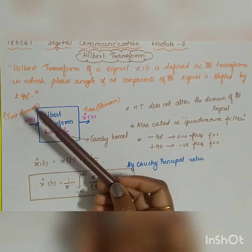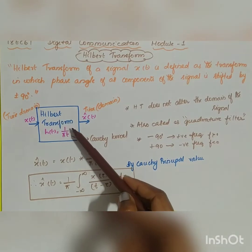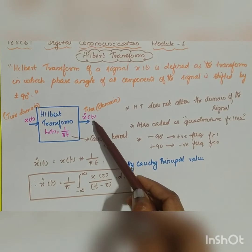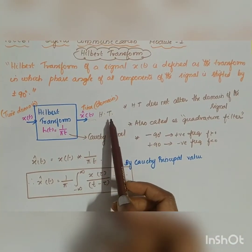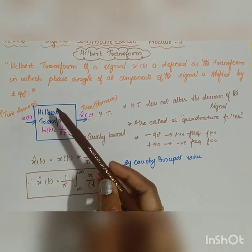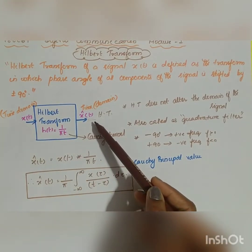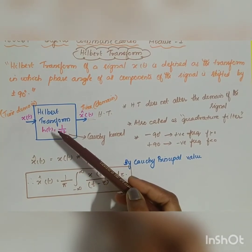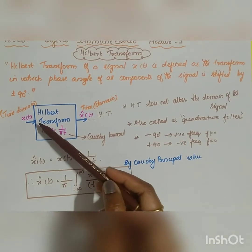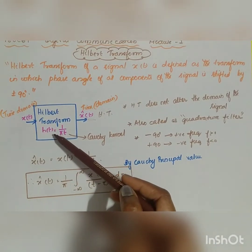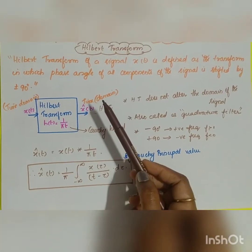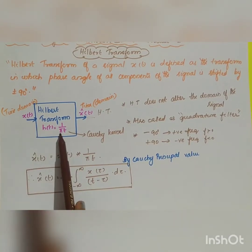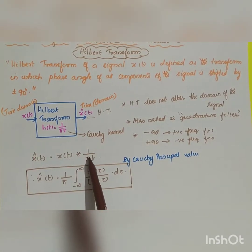If we give x(t) as the input signal to the Hilbert transform system, the output of the system is x̂(t). This x̂(t) is the Hilbert transform of the signal. For a linear system, the output is the convolution of the input and the impulse response. Here the impulse response h(t) is taken as 1/πt, so x̂(t) equals the convolution of x(t) and 1/πt.